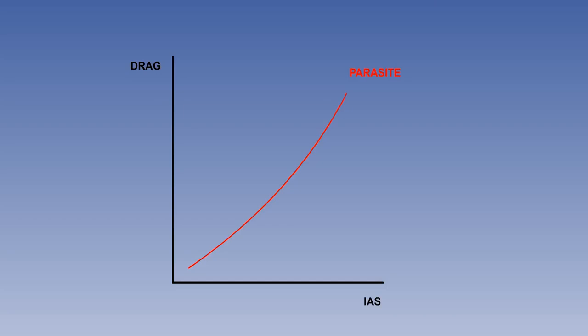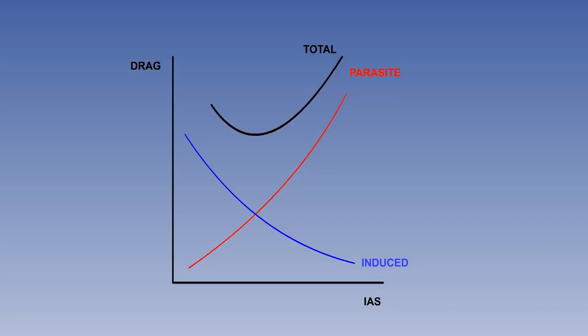If the curves for parasite drag and induced drag are plotted together, you can easily see the predominance of induced drag at low speed and of parasite drag at high speed. If the two sets of values are combined, we get a curve for total drag, a shape with which you will become very familiar.